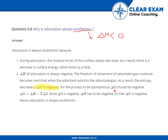For the process to be spontaneous, delta G must be negative. For any reaction to be spontaneous, delta G has to be negative. Delta G is defined by the formula: delta G = delta H minus T times delta S, where delta H is the enthalpy, T is the temperature, and delta S is the change in entropy. Since delta S is negative, delta H also has to be negative so that delta G is negative — hence adsorption is always exothermic.